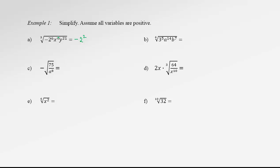For x to the 9: dividing 9 by 3 is 3, so we can take x to the 3rd power out of the radical. For y to the 21: 21 divided by 3 is 7, so y to the 7 goes out. There is actually nothing left under the radical, so the whole radical is gone and we have a nice final answer. This can be written as negative 4x cubed y to the 7.